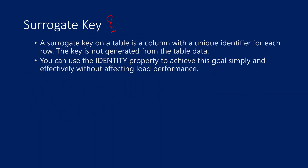So first, let's understand what a surrogate key is. A surrogate key on a table is a column which has unique identifier values for each row. For example, let's assume you have an employee table with some rows. For every row, to identify each value, we can keep one ID or key kind of column. Those columns are called surrogate keys — they identify each row with a unique identifier value.